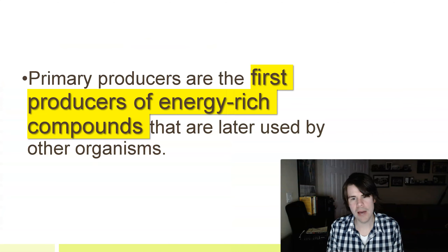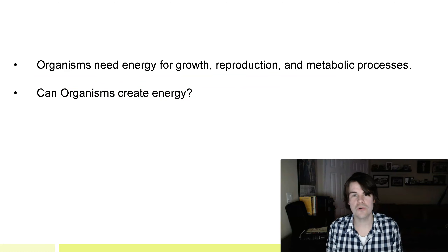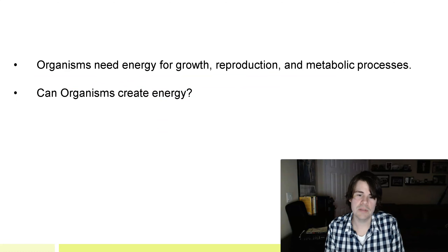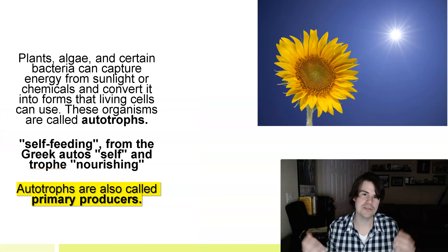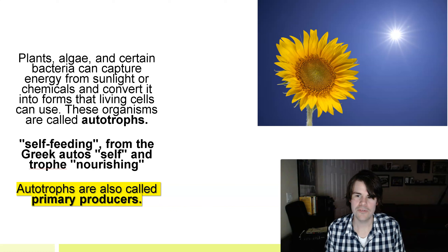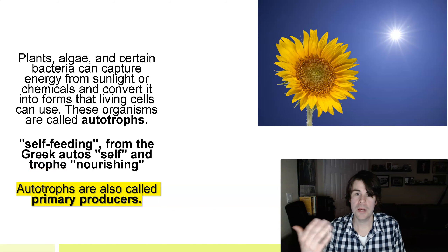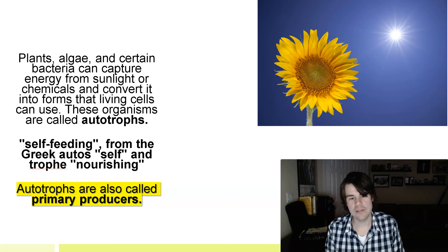Primary producers are the first producers of energy-rich compounds — they are the foundation. Organisms need energy for growth, reproduction, and metabolic processes that keep us alive. Energy cannot be created or destroyed, so where does that energy come from? It comes from the Sun. In marine science, phytoplankton needs sunlight to grow, just as plants and flowers do. Autotrophs are also called primary producers.